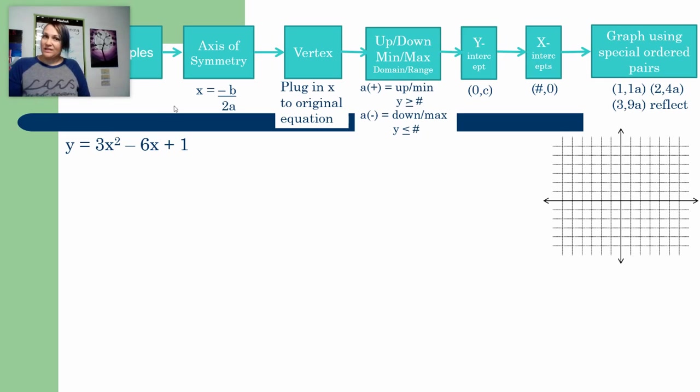Starting with our axis of symmetry, it's x equals negative b over 2 times a. And in this problem, my b is a negative 6, and my a is 3. Since my b was already negative, when I plug it into this formula, the double negative will change it to a positive 6. So I rewrite it as a positive 6, and then 2 times 3 on the bottom. We do a little bit of calculations, and we get x equals 1. And remember, this is our first answer. This is my axis of symmetry.